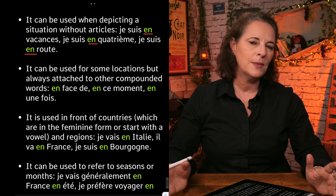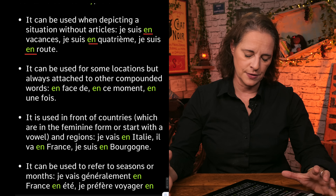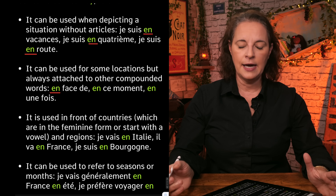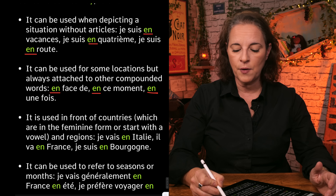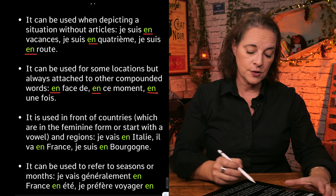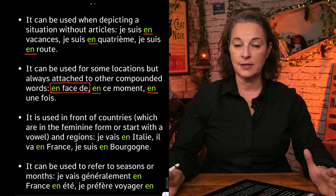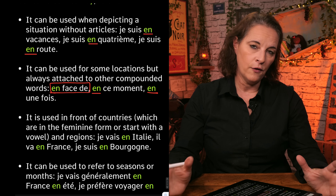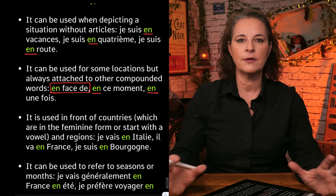En can also be used to refer to locations. For example, en face de — in front of. En ce moment — at that moment. En une fois — once, in one go. So as in the location, en face de — you may have heard of that — means in front of. It often refers to and is often attached to a compounded set of words.